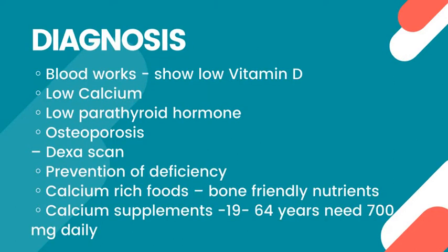The diagnosis is confirmed by doing blood work, which may show low vitamin D, low calcium, and low parathyroid hormone. The doctor may also order a DEXA scan to rule out osteoporosis. The good news is it's preventable by adding calcium rich foods in your diet. Calcium supplements can also be taken — adults aged 19 to 64 only need 700 milligrams of calcium daily.